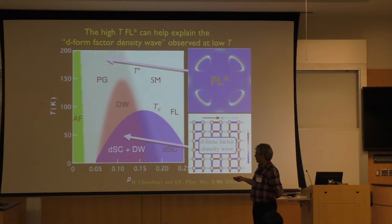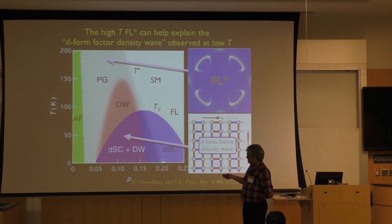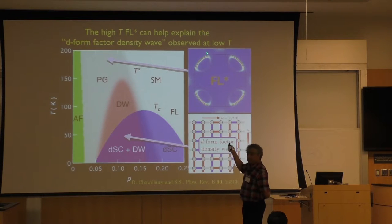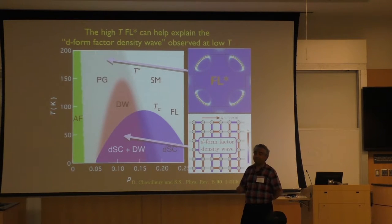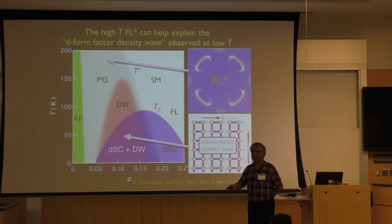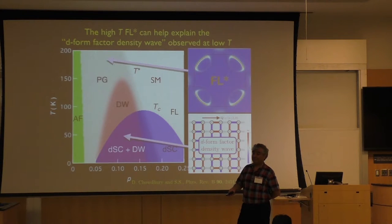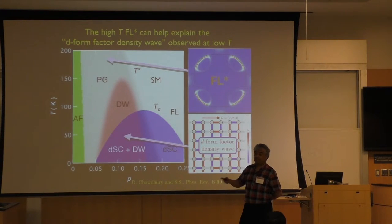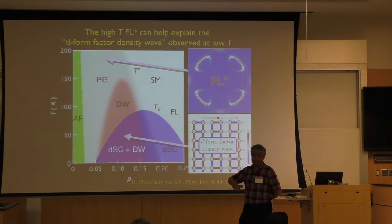STM shows a dramatic change from the arc to the full Fermi surface. This is a regime where clearly the density wave order doesn't have enough coherence to explain that. So it looks like there is density wave order, but that's making life more difficult because it's hiding the real critical point, which is probably some kind of confinement transition from FL* to FL.